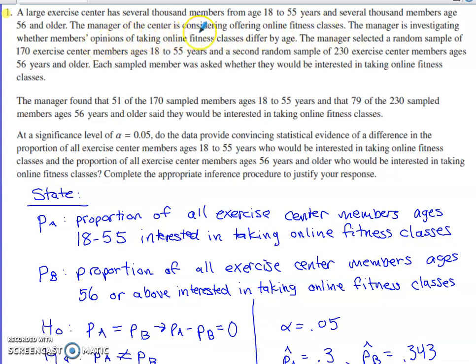The manager selects a random sample of 170 members age 18 to 55 and then a second random sample of 230 members ages 56 and over. Each sampled member was asked whether or not they would be interested in taking online fitness classes. The manager found that 51 of the 170 age 18 to 55 and then 79 of 230 of the members age 56 and older said they would be interested in taking the online fitness classes.